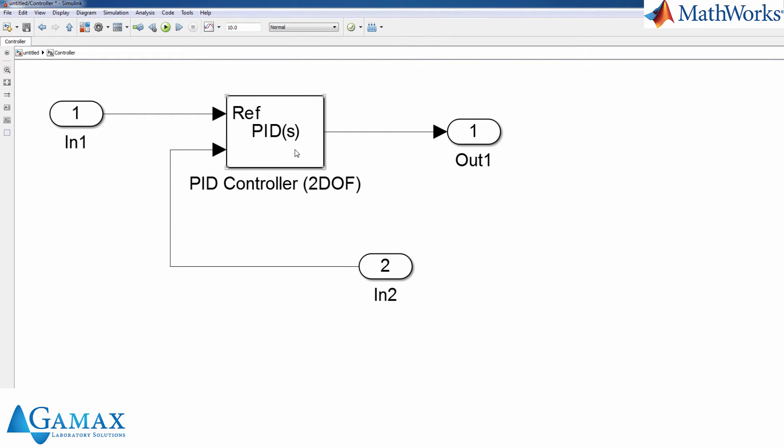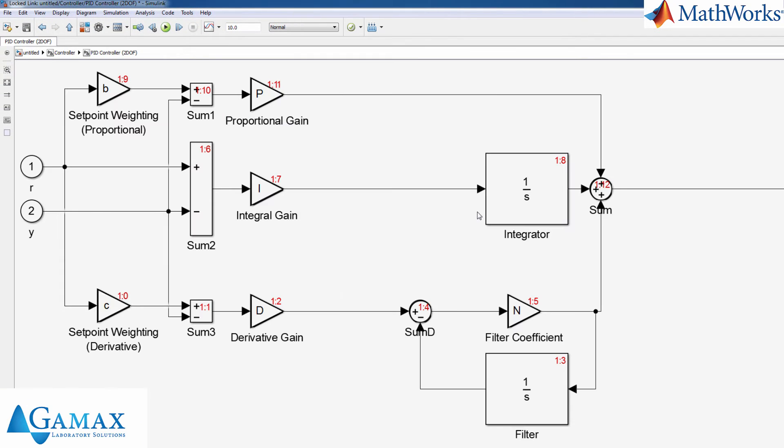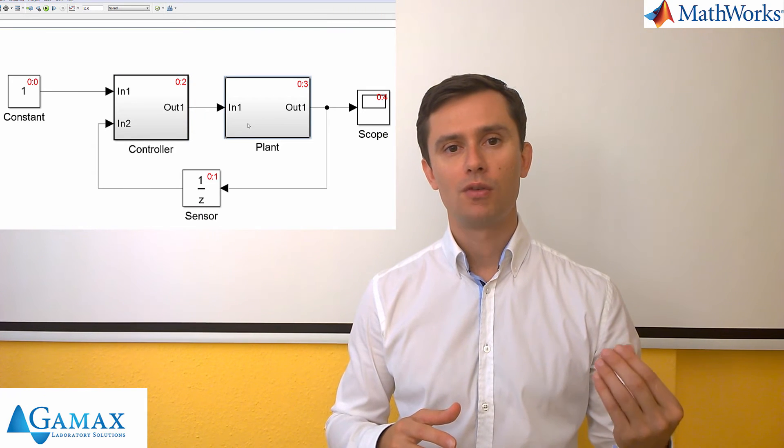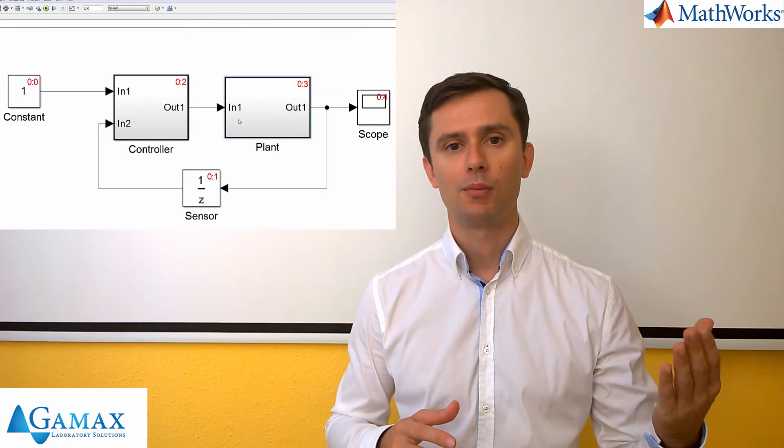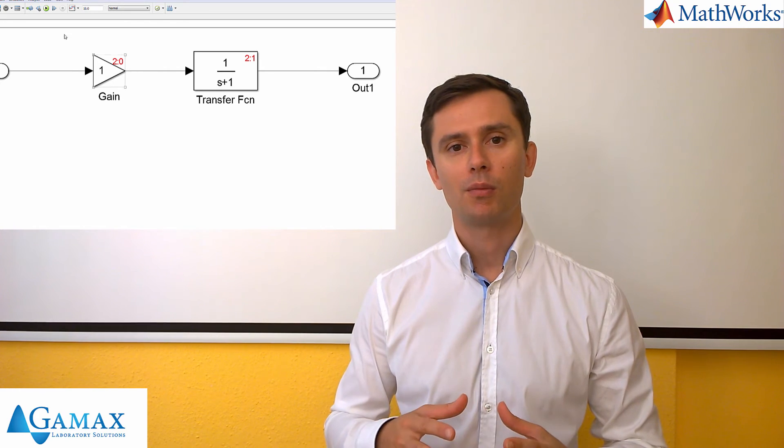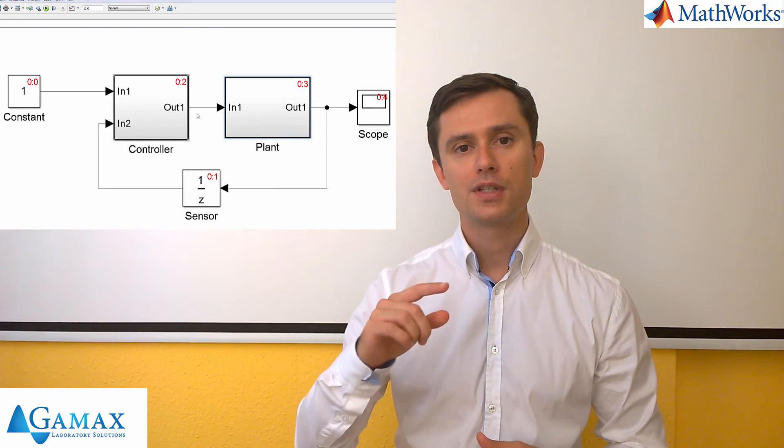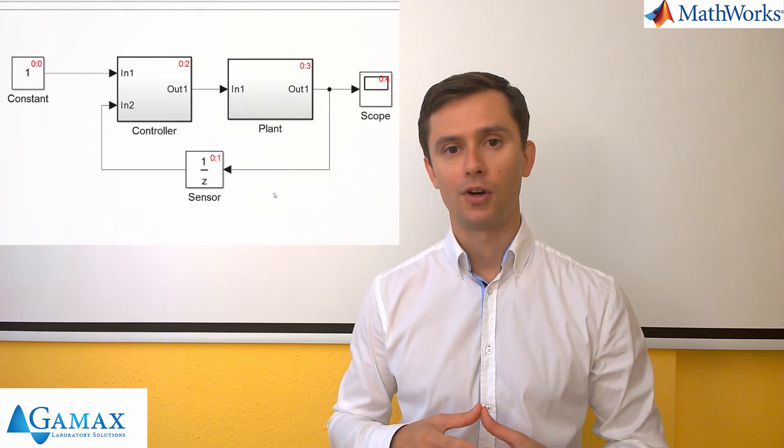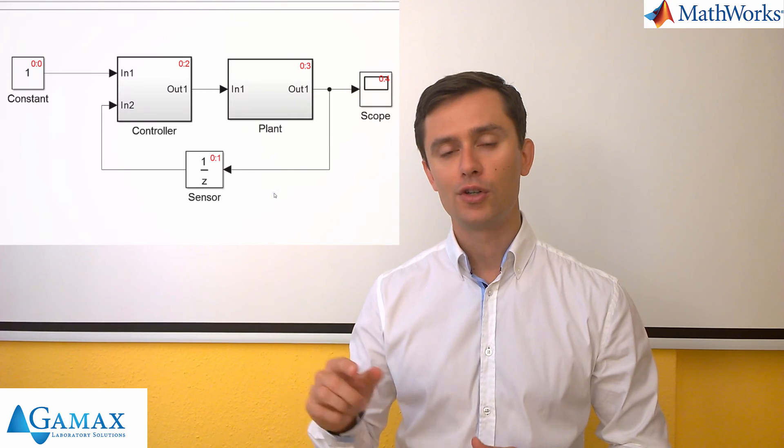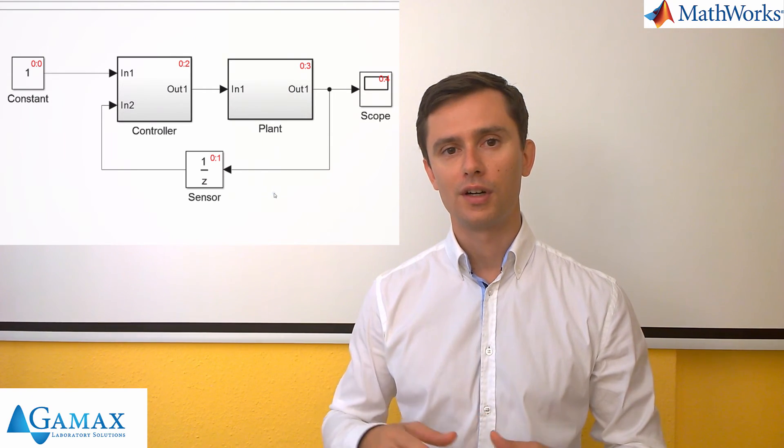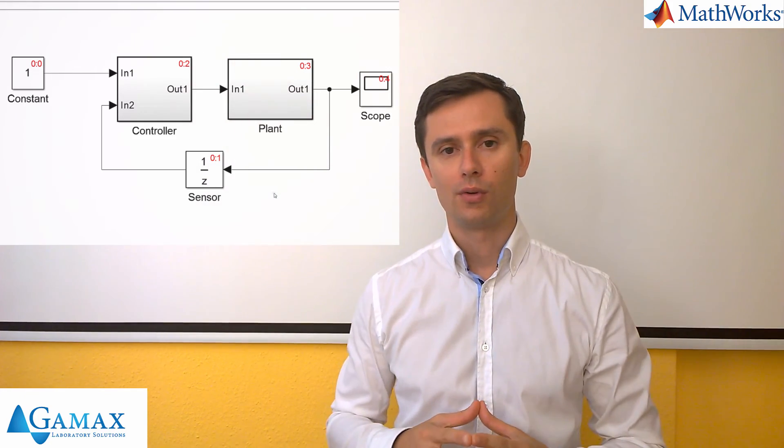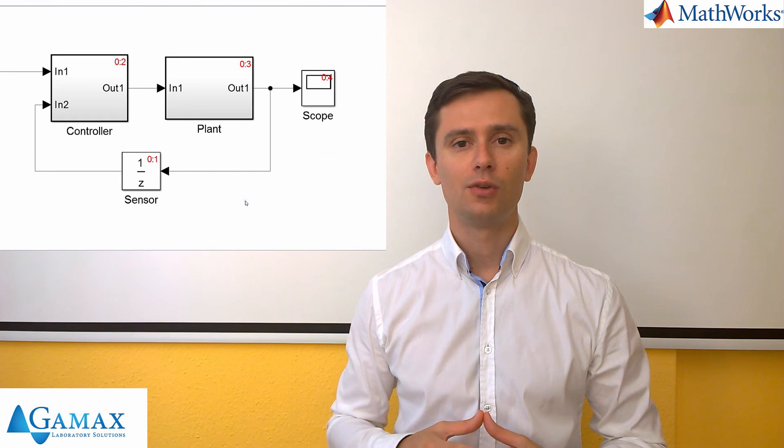Now, if we enter these blocks, the plant model or the PID controller, then we will see that the first number also changed. So this shows from which atomic subsystem we are talking. So each atomic subsystem will be numbered. And the first number shows from which subsystem execution order we are talking. And the second number shows what is the actual execution order. And the zero is always the highest level execution order.